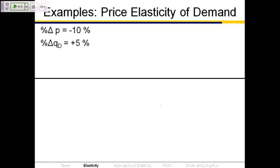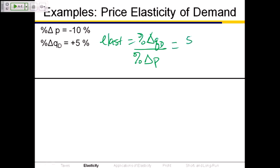Suppose that the percentage change in price is negative 10, and the percentage change in quantity demanded is plus 5. Elasticity tells us how much quantity demanded changes with respect to the change in price. So it's the percentage change in quantity demanded divided by the percentage change in price: plus 5 in the numerator, minus 10 in the denominator, giving us negative 0.5.